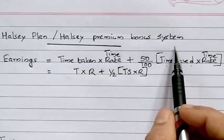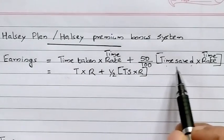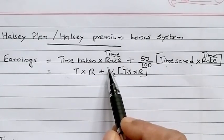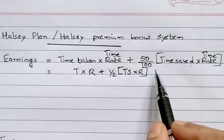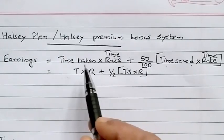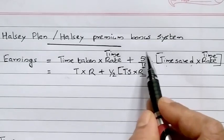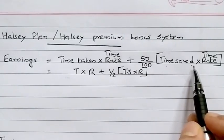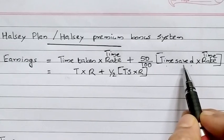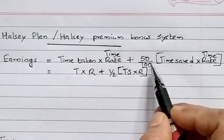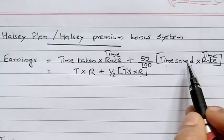First is the Halsey Plan. Under the Halsey Plan, wages and earnings are calculated as: Time Taken × Time Rate + (50/100) × Time Saved × Time Rate. The first part is the time rate wages — Time Taken × Time Rate. The second part is the worker's bonus, which is 50% of Time Saved × Time Rate.